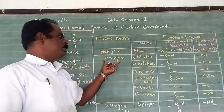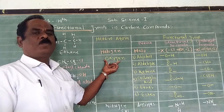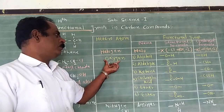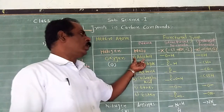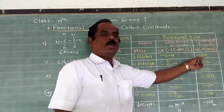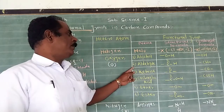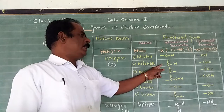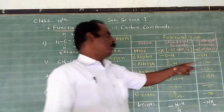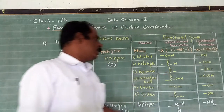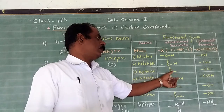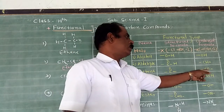Next, oxygen is a heteroatom. If it forms a bond with carbon in a hydrocarbon compound, the example is the alcohol group. The structural formula is bond O — bond H, and the condensed formula is bond OH. For aldehyde, the condensed formula is bond CHO. For ketone, the functional group is bond C double bond O, and the condensed formula is bond CO.